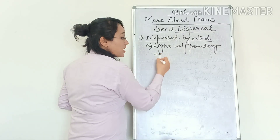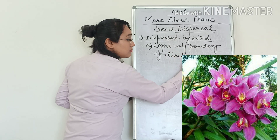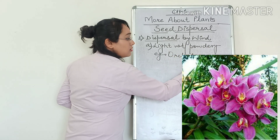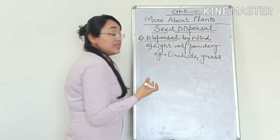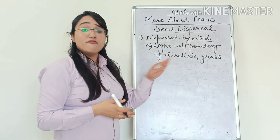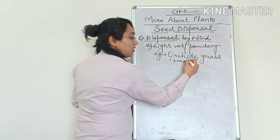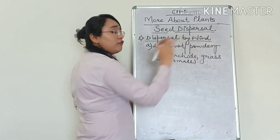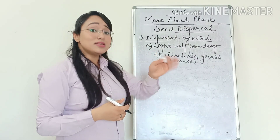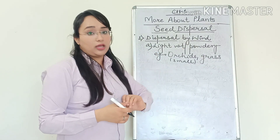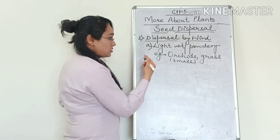Examples of such plants are orchids or grass. The seeds of orchids are very, very small and very light in weight — kind of a powdery thing. That's why they can be easily dispersed or carried away by the wind. So the seeds need to be light in weight.